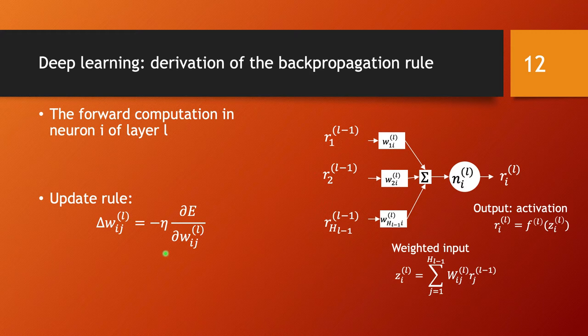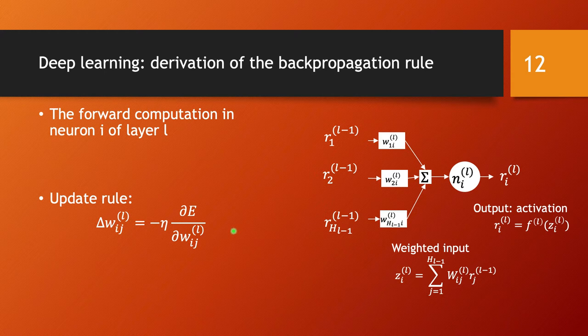The reason this is more complicated for deep learning is because the error function, while it is a function of the weights w_l_i_j, the way these weights contribute to the error function is diluted through a number of layers and weighted and activation computations. Calculating these partial derivatives is somewhat tricky — and that's exactly what I would like to open up. Once we clarify how to calculate this partial derivative, the update rule is nothing else than the gradient descent rule we have seen before.